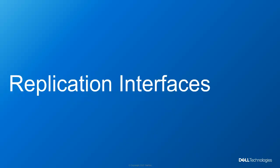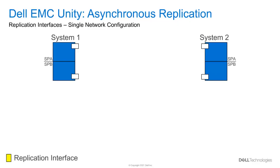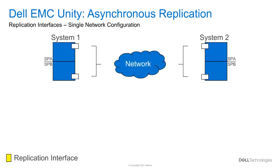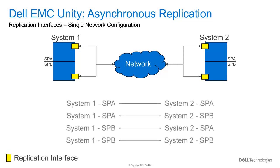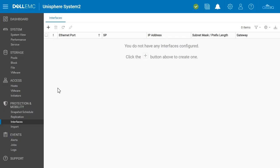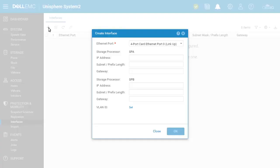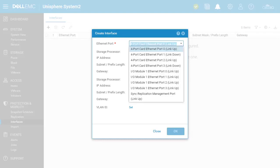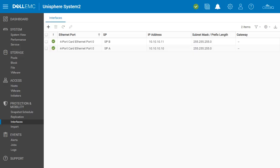Next, we will talk about replication interfaces. In this example, asynchronous replication will be configured between system 1 and system 2. After connecting at least one Ethernet interface from each SP to the network, replication interfaces can be configured. Once the interfaces are created, the replication connection can be established. This connection automatically matches and creates connections between interfaces on each system. In Unisphere, the interfaces page is found under Protection and Mobility. Click the plus sign to create a new interface. Here, the physical interface to create the replication interface on is selected and the networking information is provided. The drop-down list provides a list of interfaces that can be used. After creation, the replication interfaces are displayed on the Interfaces page.